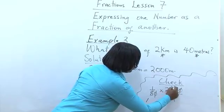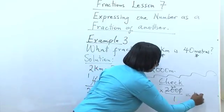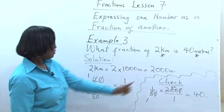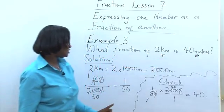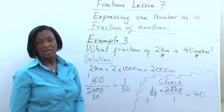5 in 200 is 40, and we have 40 times 1, which is equal to 40. So indeed, 40 meters is 1 over 50 of 2 kilometers.